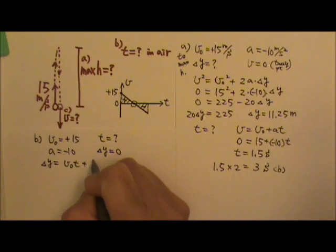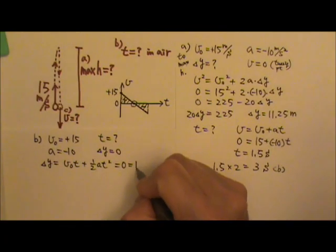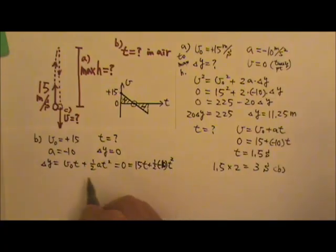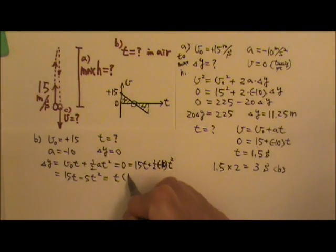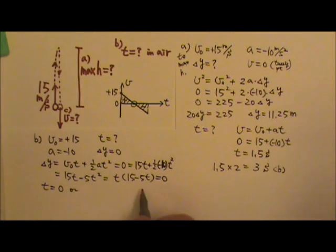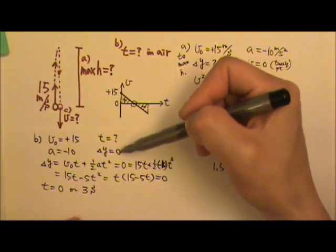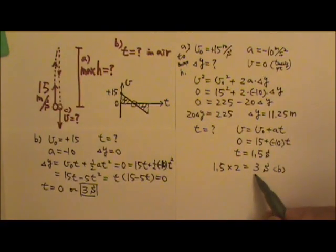Since there's no final velocity involved, the equation delta y equals v₀t plus one-half at squared is convenient. Delta y is 0, so 0 equals 15T plus one-half times negative 10 times T squared, which gives 15T minus 5T squared. Factoring out T: T times (15 minus 5T) equals 0. You get T equals 0 or T equals 3 seconds. It makes sense to have two answers: the displacement is 0 at the beginning when T equals 0, and it's 0 again at T equals 3 seconds — same answer as before.